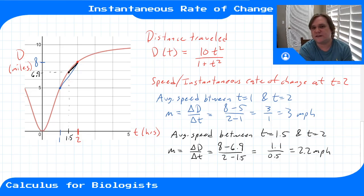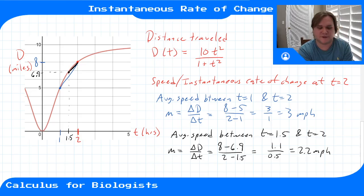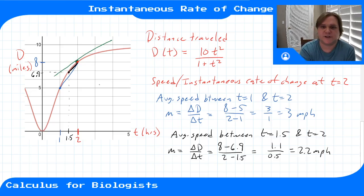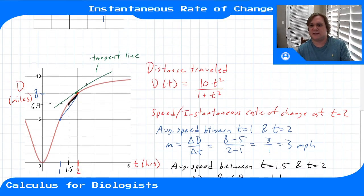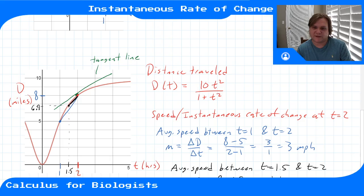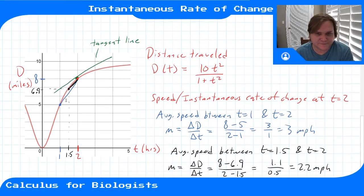We want to keep doing this process, and eventually if I keep making smaller and smaller intervals with points closer and closer to two, I'll eventually get the tangent line. The tangent line is just touching the function d(t) at the point where we're evaluating the slope. At t = 2, the tangent line is tangent to this curve — tangent means it touches at only one point, doesn't intersect it, just kind of kissing the side of the curve.